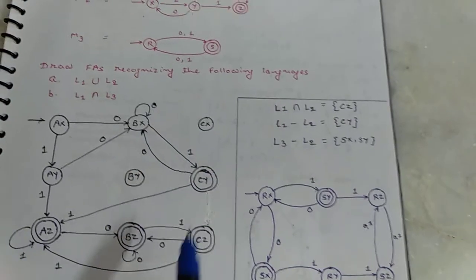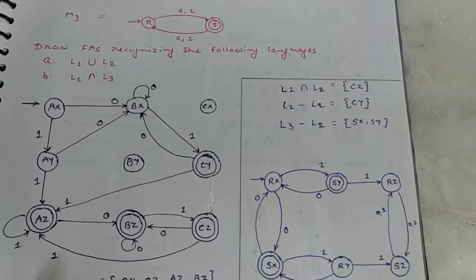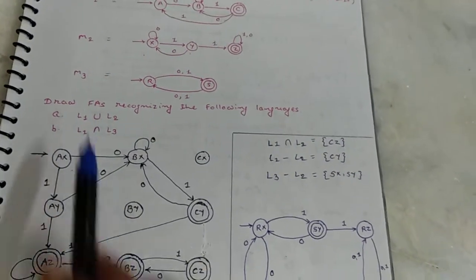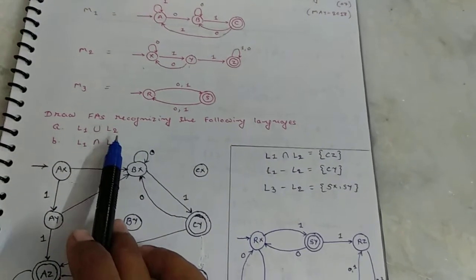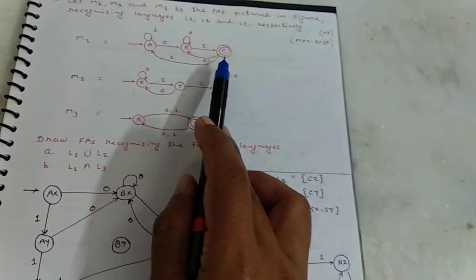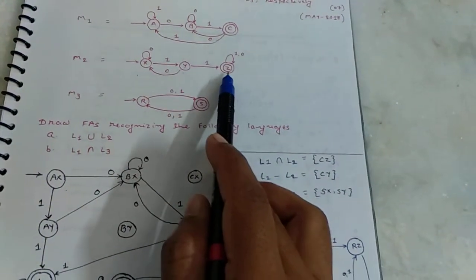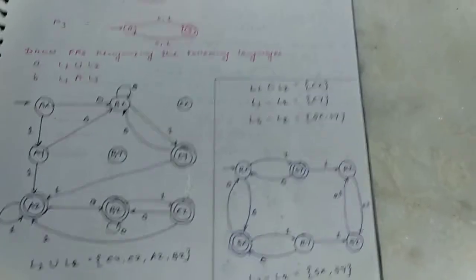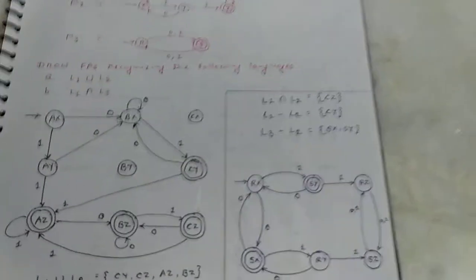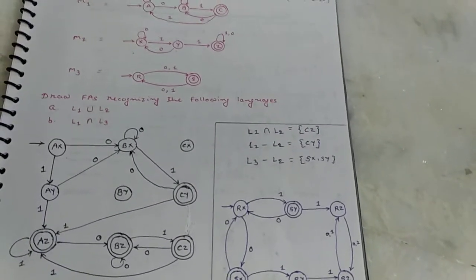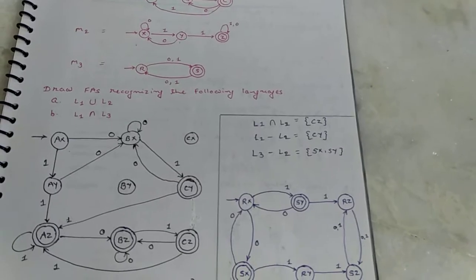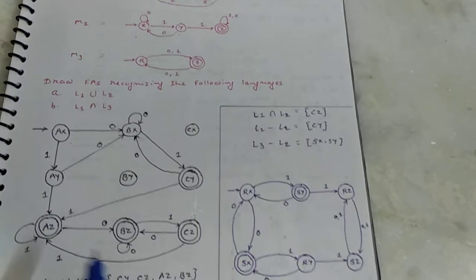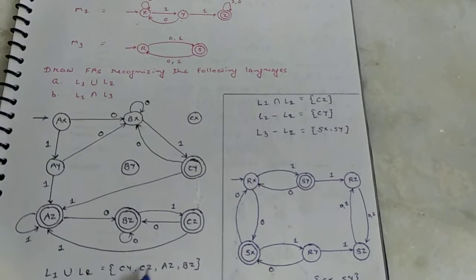Thus draw all the possible input symbols for visited states only. Now for final states, here L1 union L2. In L1, final state is C and L2, final state is Z. So for L1 union L2, all the possible states with either C or Z. In which state either C or Z comes, it becomes the final state. So for L1 union L2, CY, CZ, AZ and BZ are final states.